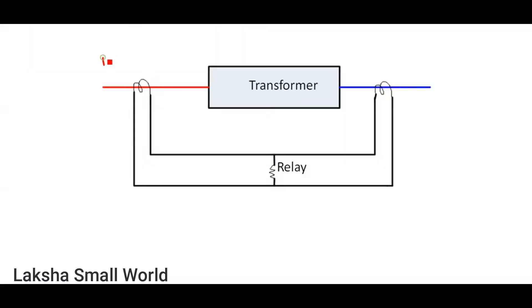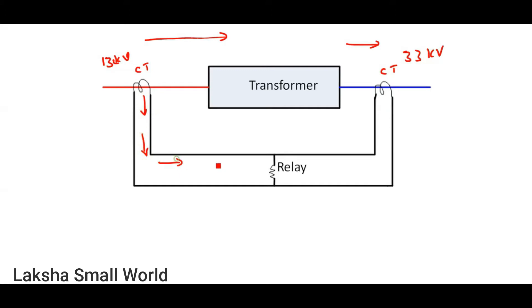So this is the 132 kV side and this is the 33 kV side. The transformer is connected to the 132 kV supply, and there is one CT on each side. Normally power current flows through the CTs in a certain direction. When current flows in through both CTs in the normal direction, inside the relay almost no current will flow because the two currents are almost equal — the difference in current is zero, so the relay will not operate.